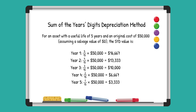So in the first year, we use the fraction 5/15ths of the depreciable basis for depreciation — that's 5/15ths of the original value minus the salvage value. In the second year, it's 4/15ths, then 3/15ths in the third year, and so on. At the end of the five years, the accumulated depreciation will equal the original cost of the equipment and the book value will be zero.